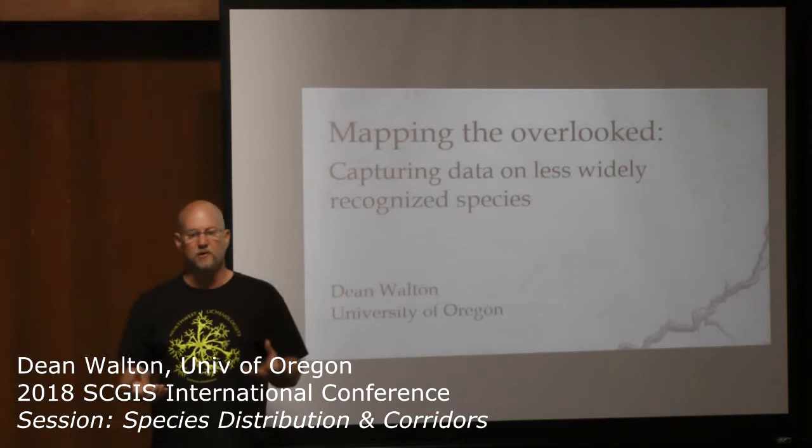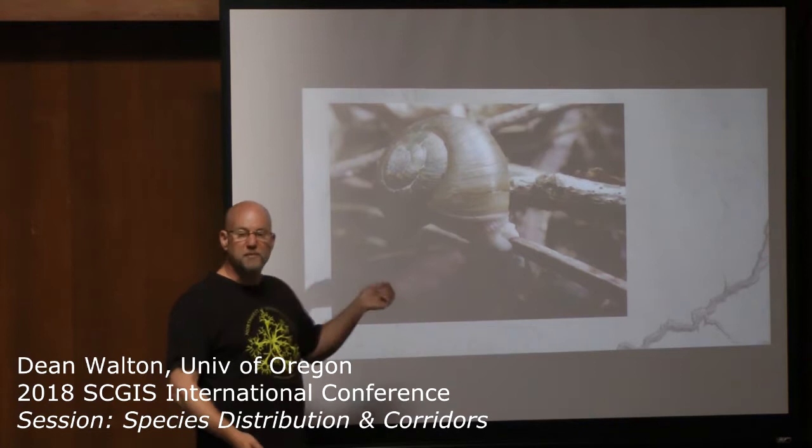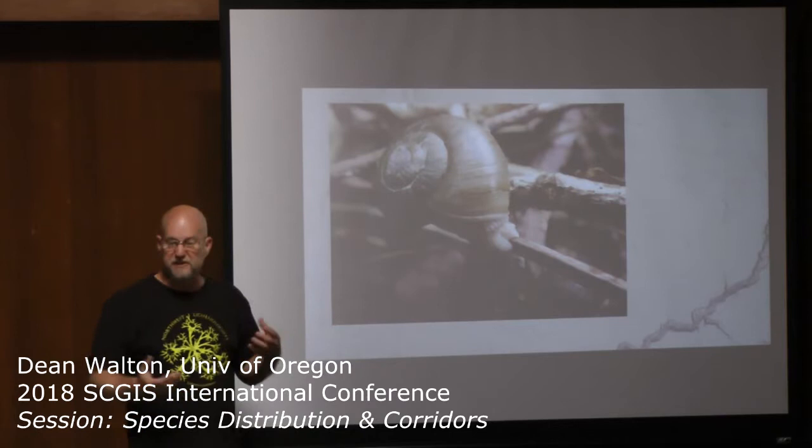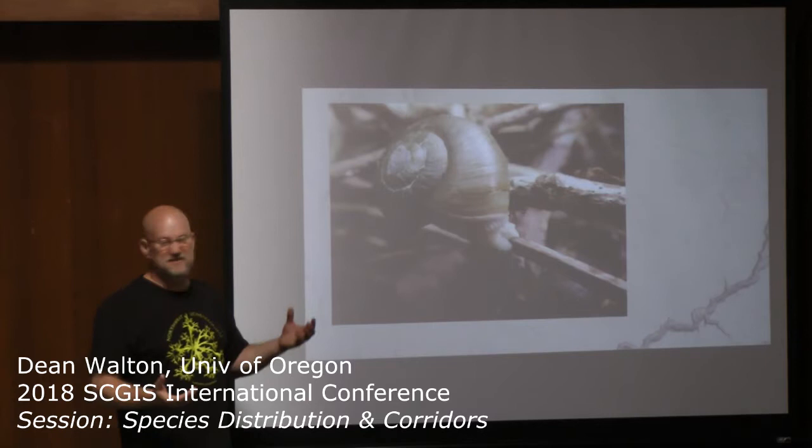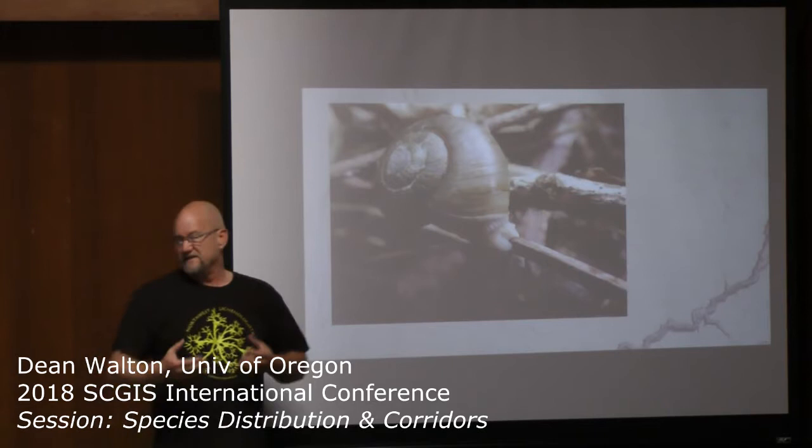The big stuff I'm going to talk about is something like this robust lance tooth snail that we have in Oregon. Now this guy is a G5 species, so he's not particularly rare, but he's at least probably the size of a penny, maybe up to a quarter. So as I say, these are the big things I'm beginning to talk about, and these are overlooked.